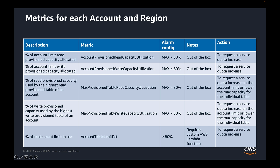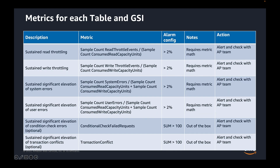First, we have metrics available on an account and region level — for example, Account Provisioned Read Capacity Utilization, which can be used to identify when a service quota increase could be desirable. Next, we have metrics available to every table and Global Secondary Index. These can indicate a capacity configuration issue or potentially even an application issue. Some of these metrics require metric math, for example to determine if a table or GSI suffers from sustained read and write throttling. Others are available out of the box, like the transaction conflict metrics that can signal sustained transactional conflicts.